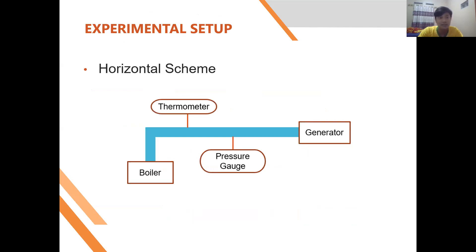Here is the horizontal scheme for the experimental setup. The components consist of: first, the boiler; second, the thermometer; third, the pressure gauge; and fourth, the generator. In this scheme, we use an elbow pipe to change the direction from vertical to horizontal.